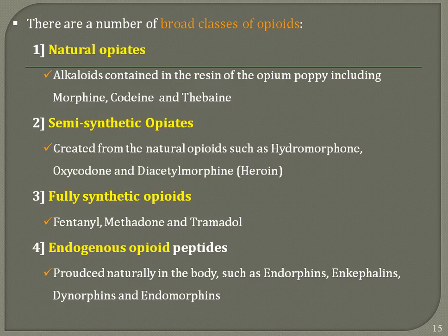Fully synthetic opiates include fentanyl, methadone, and tramadol. Endogenous opiates are peptides produced naturally in the body, such as endomorphins, enkephalins, dynorphins, and endorphins.